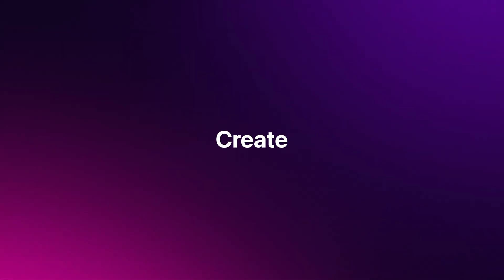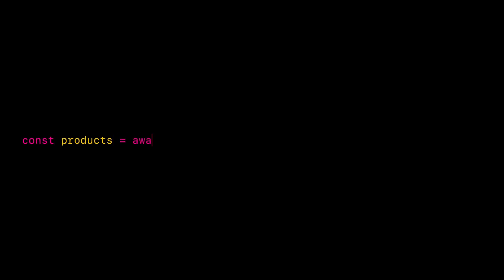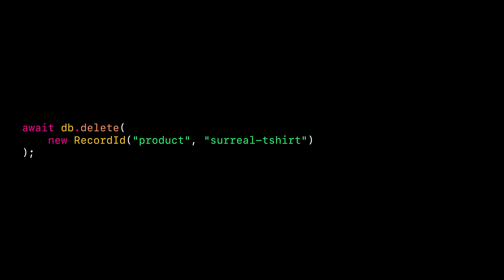CRUD operations. Let's put our connection to work by performing some CRUD operations — Create, Read, Update, and Delete — the core operations for any database. While you can always send custom queries from the JS SDK, it also provides a number of built-in methods for data manipulation. To create a new record, use the create method — this example creates a new product with a specified ID, name, price, and stock quantity. To retrieve records, use the select method, which fetches all records from the product table. To partially update an existing record, use the merge method — here we update the stock quantity of a specific product. And lastly, to delete a record, use the delete method to remove a specific product from the product table.